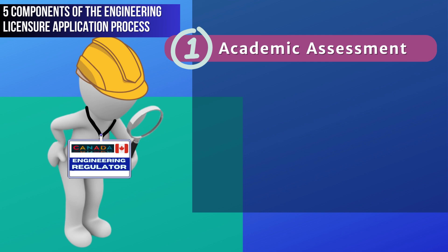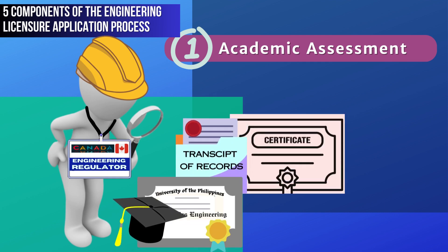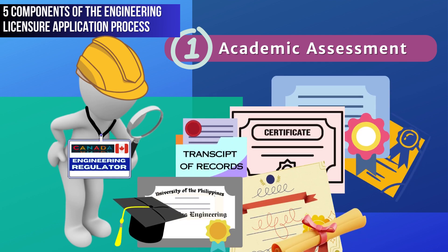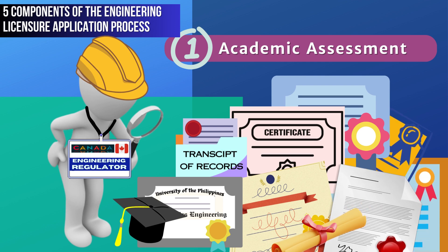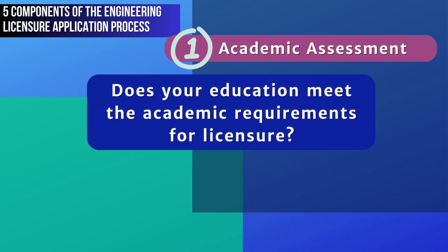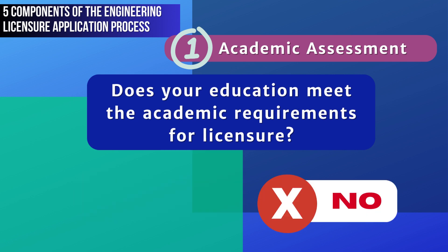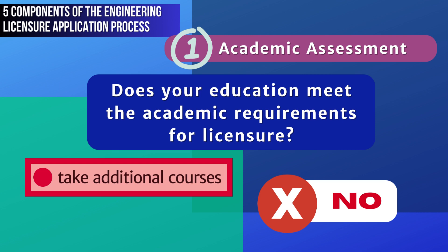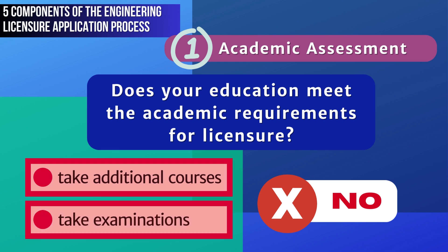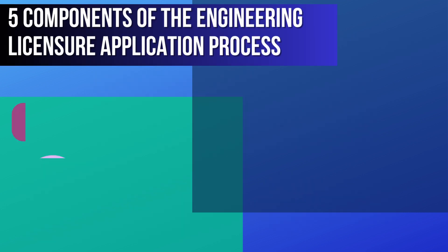One of the five essential requirements for licensure is an education in engineering. The regulator will evaluate your academic documents — such as degrees, transcripts, and diplomas — to determine if your engineering education meets the academic requirement for licensure, or if you need to take additional courses or technical examinations in Canada.